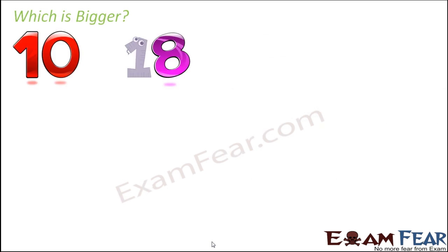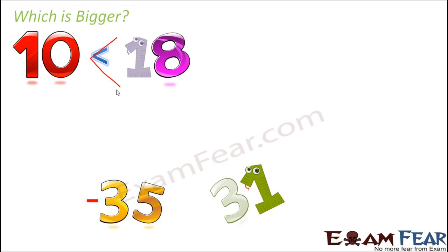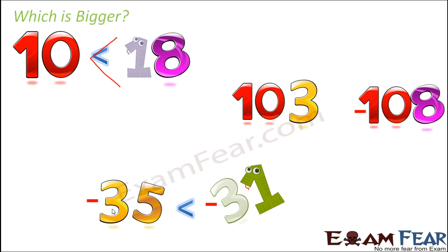Let us now look at the same examples. 10 and 18 — 18 is greater than 10. Minus 35 and 31: here you have a positive and a negative number, and as I have told, a positive number is always greater than a negative number. Similarly with 103 and minus 108: again you have a positive and a negative number, so the positive number will be greater. With these simple tips, you can very quickly answer which integer is bigger and which integer is smaller.